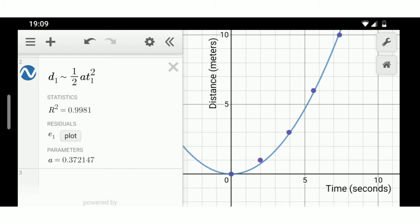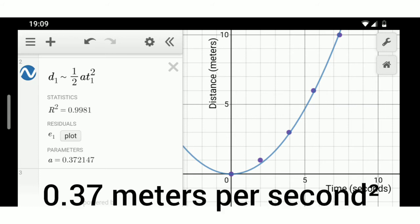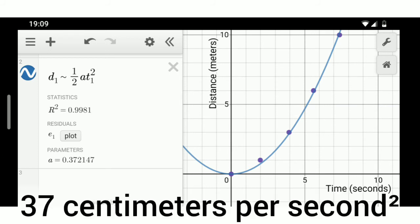But with this regression, I can determine that a is 0.37. A is the acceleration. That tells me that the acceleration is 0.37 meters per second squared, or 37 centimeters per second squared.